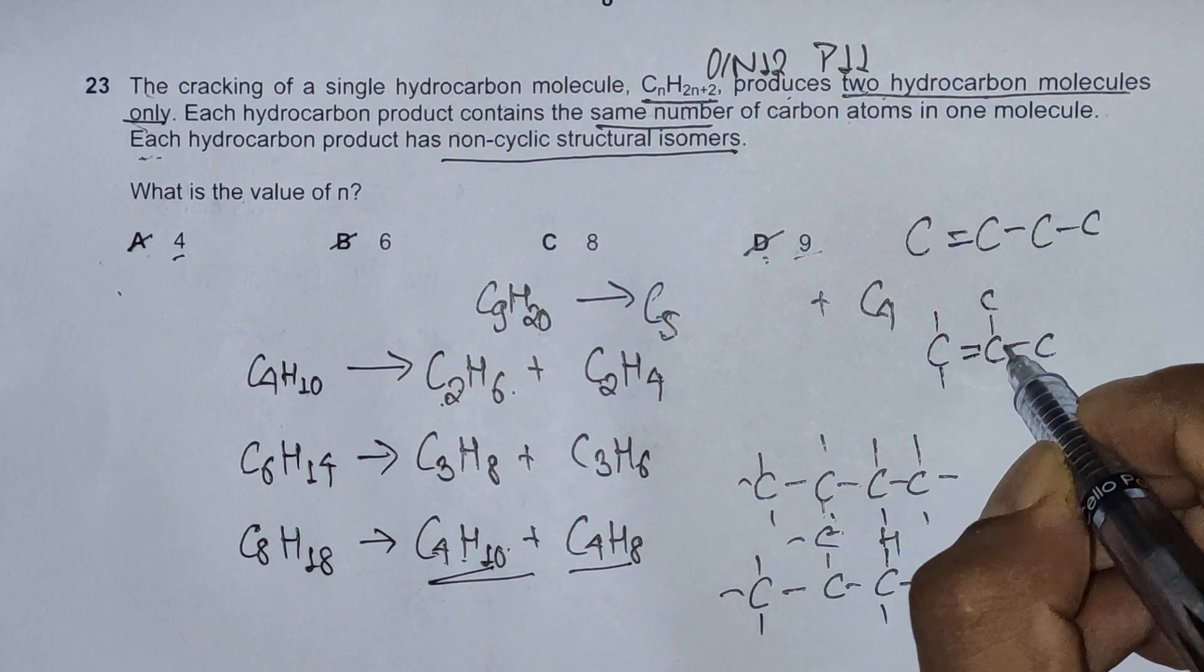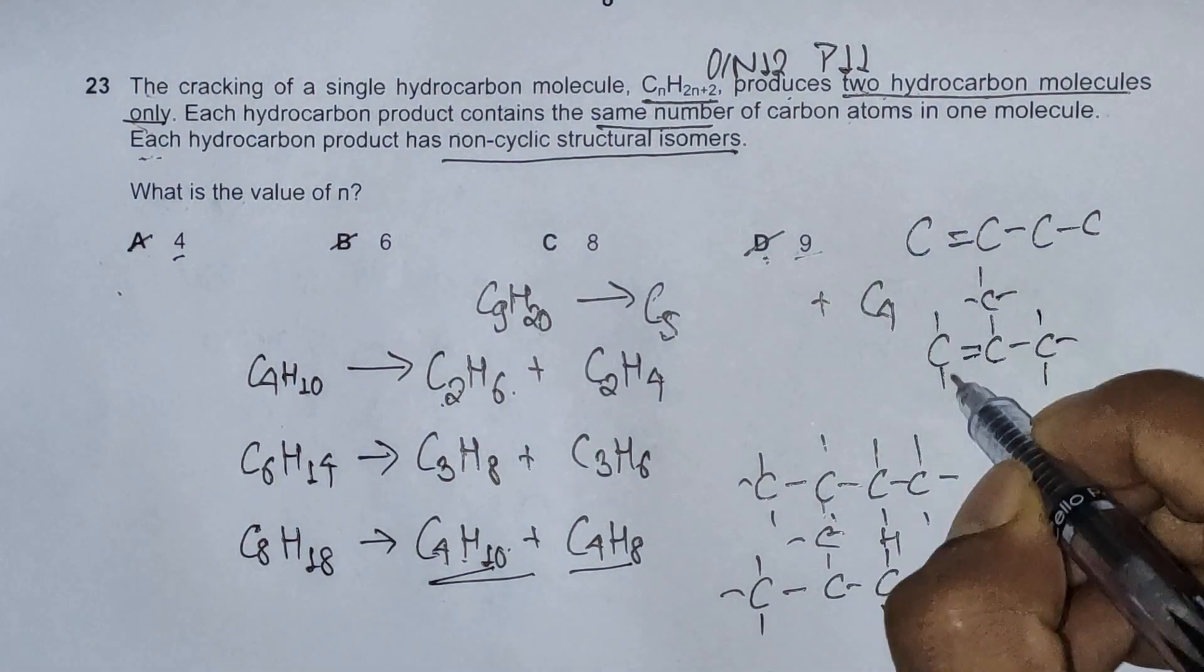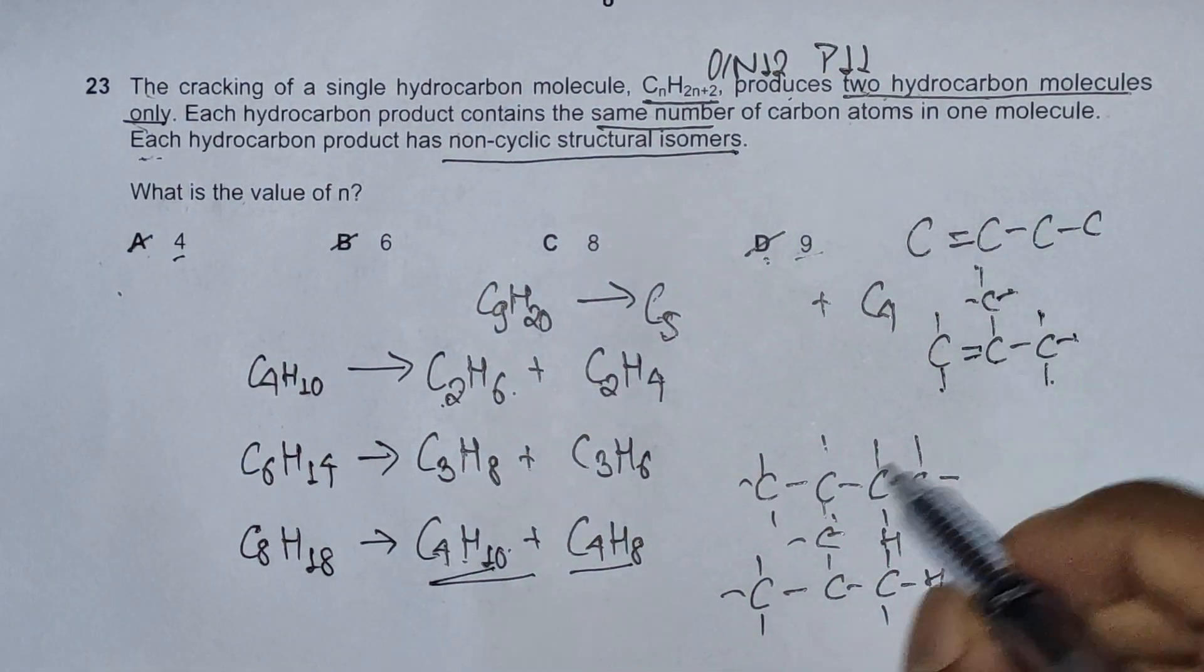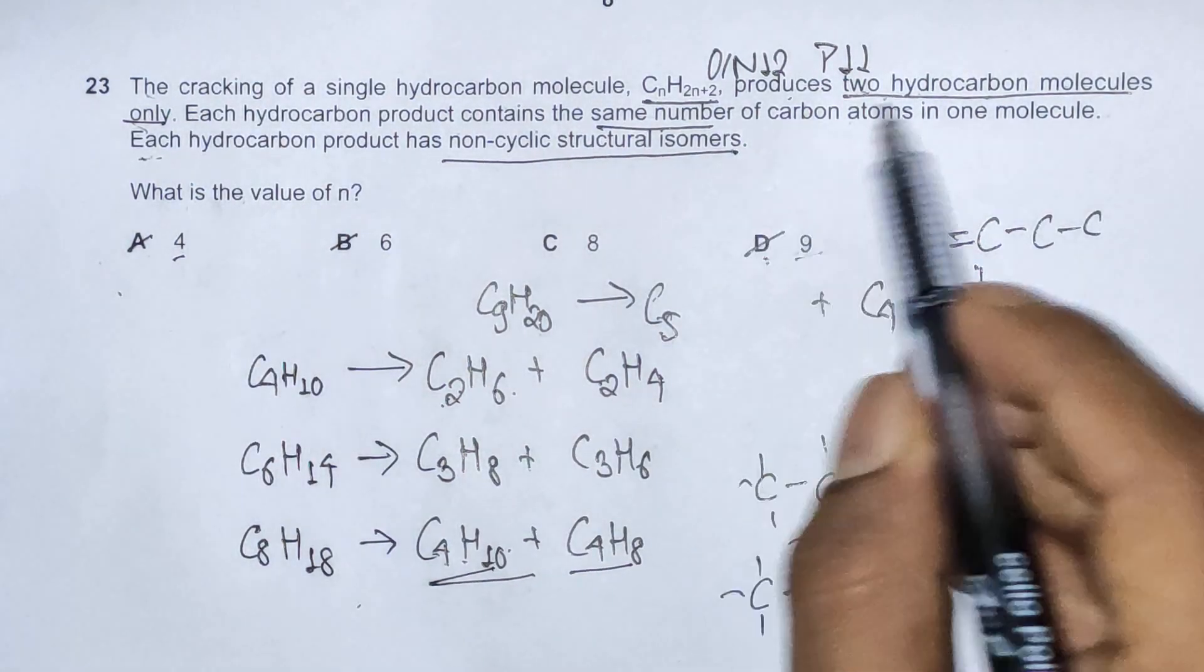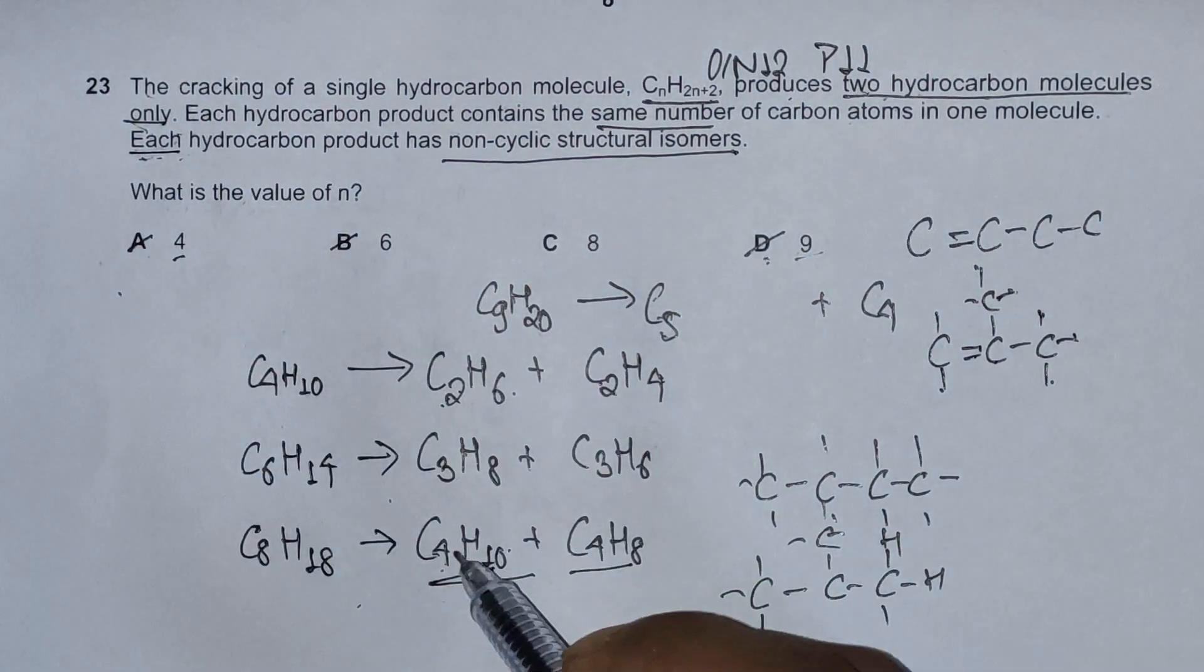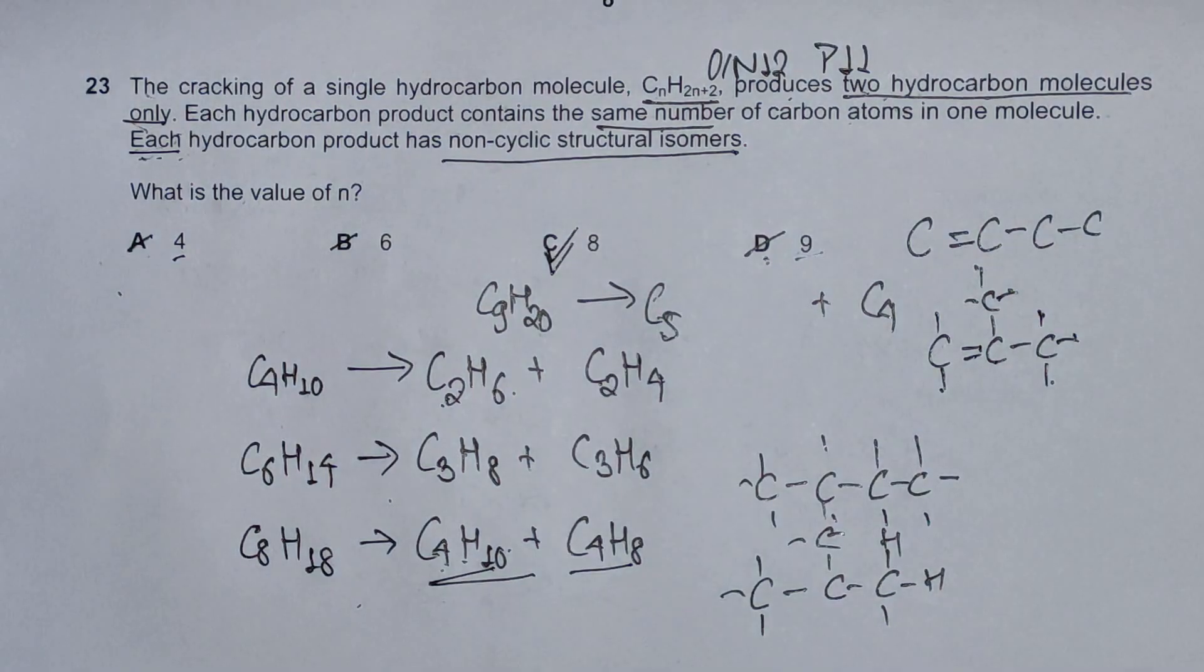This carbon atom has 4 covalent bonds. This has 1, 2, 3. 1, 2, 3. So we have 1, 2, 3, 4, 5, 6, 7, 8. 8 hydrogen atoms, 4 carbon atoms. So option C satisfies both criteria of same number of carbon atoms in each hydrocarbon product, and each hydrocarbon product having non-cyclic structural isomers.